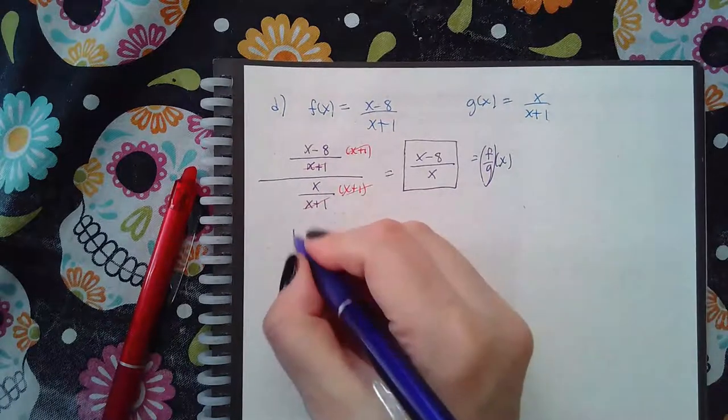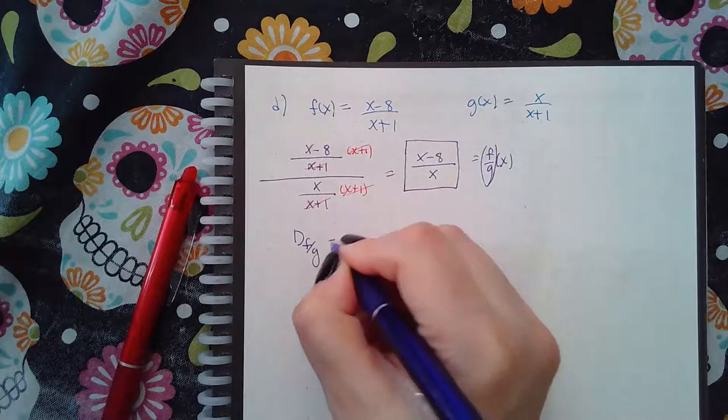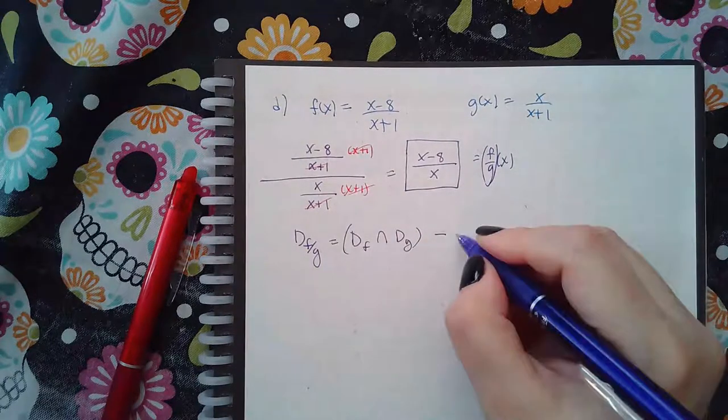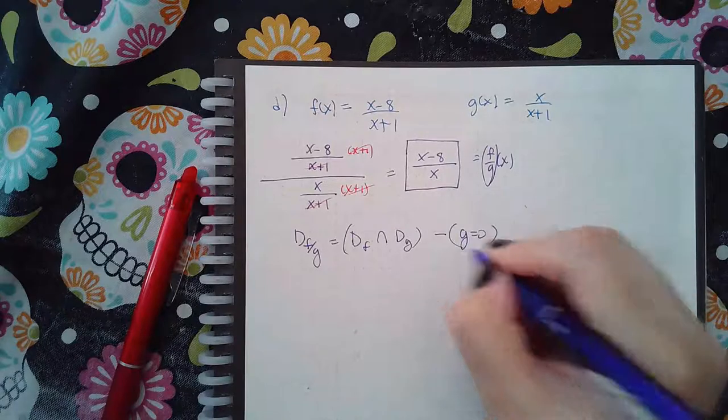But for the domain, the domain of f over g is the domain of f intersect the domain of g minus where the denominator equals 0.